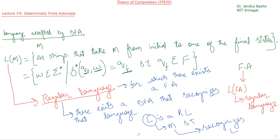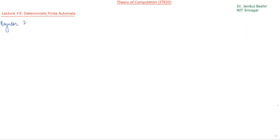The language of a finite automata is called a regular language. Since DFA is a type of finite automata, the language accepted by a DFA is a regular language. So a regular language is a language for which there exists a finite automata — or equivalently, there exists a DFA that recognizes it.